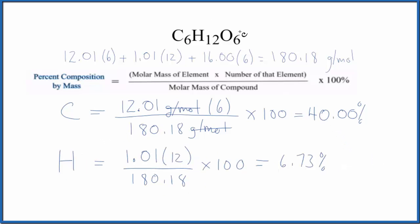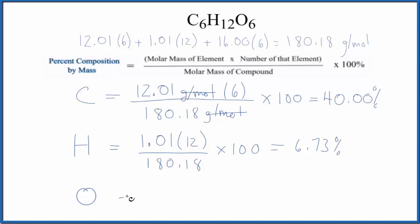Let's do the oxygen. For the oxygen, on the periodic table, 16.00 grams per mole, we have 6 oxygen. So we take the molar mass of the oxygen times the number of oxygen atoms, 6. Divide by the molar mass for the compound. Multiply it by 100, and we get 53.28%.